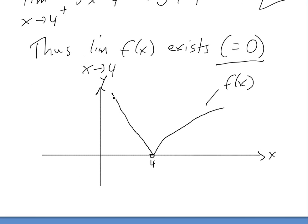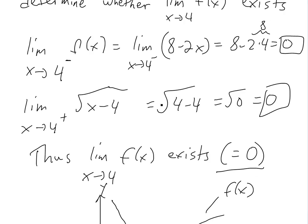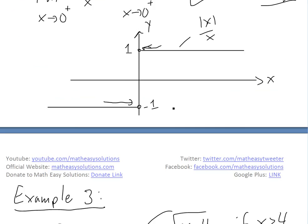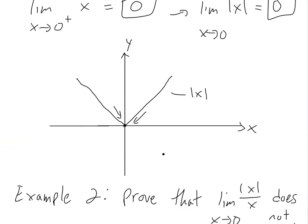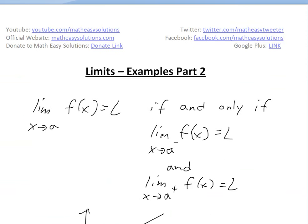If you graph this function, the first part is a linear function — eight minus two x goes down to an open circle at four — and then the square root function goes up from there. Both sides approach zero, confirming the limit. That's all for today — remember you can download these notes from the Dropbox link below, and stay tuned for another Math Easy Solution.